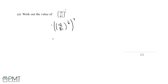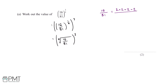16 over 81 to the power of 1 over 4 is the equivalent of the 4th root of 16 over 81. And 16 over 81 could also be written as 2×2×2×2 divided by 3×3×3×3. So the 4th root of 16 will be equal to 2, and the 4th root of 81 will be equal to 3.